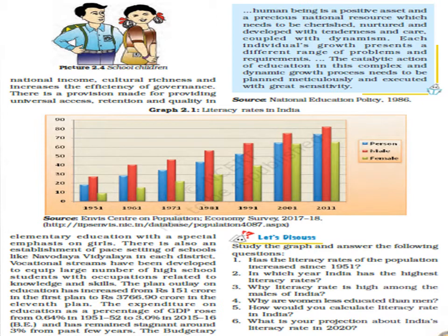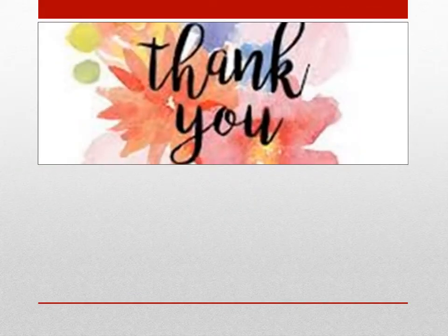Now we have some questions. You have a graph to study and need to answer: Has the literacy rate of the population increased since 1951? In which year did India have the highest literacy rate? Why is the literacy rate higher among males? Why are women less educated than men? How would you calculate the literacy rate in India, and what is your projection for India's literacy rate in 2020? Do this activity. I hope you all understood the topics taught in this video. Thank you.